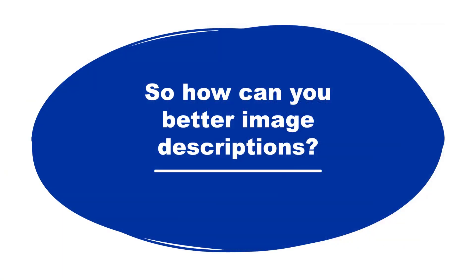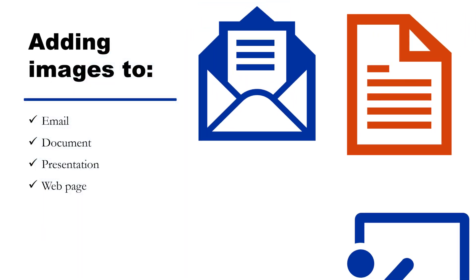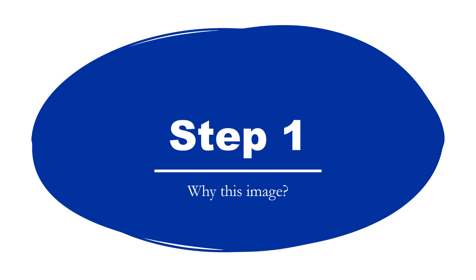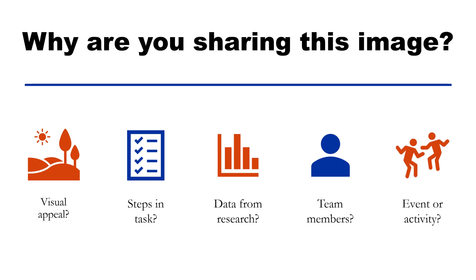So how can you write better image descriptions? Whether you are adding images to an email, a document, a presentation, or a web page, follow these three simple steps to write more helpful image descriptions for your content. Step one: why this image? Start by asking yourself why you are using this particular image — to add visual appeal, to demonstrate steps in a task, to share data from a research project, to share a photo of your team members, or share images from a recent event or activity. Knowing why you are sharing the image will help you determine the type of information that needs to be in the image description.